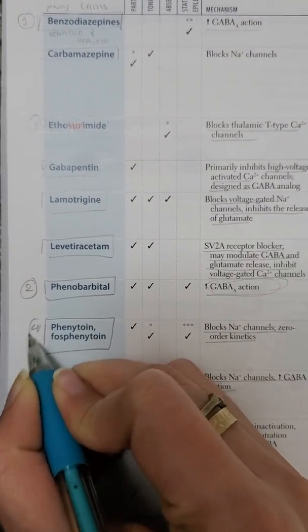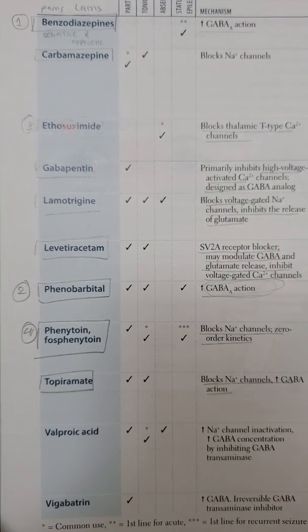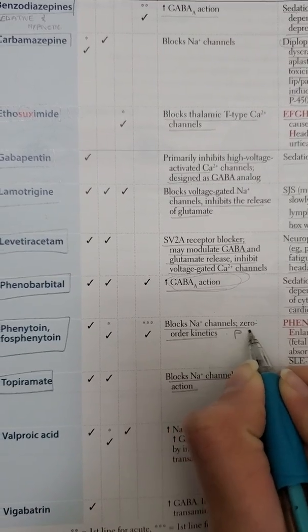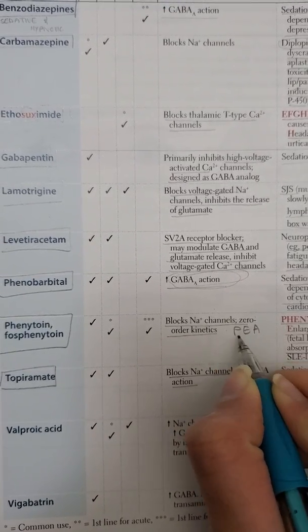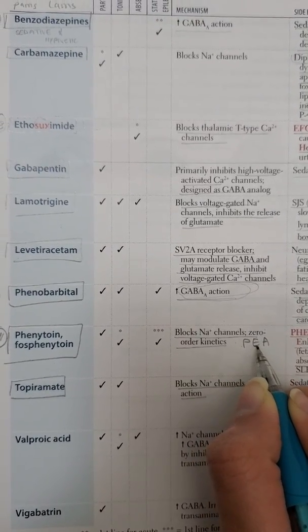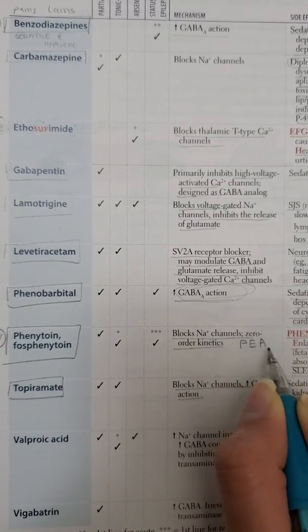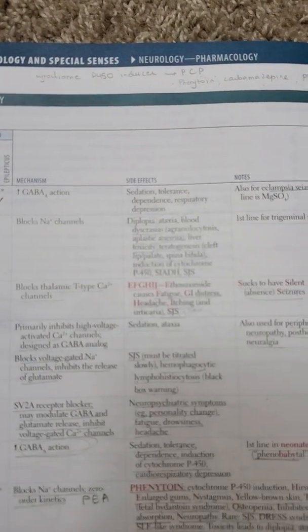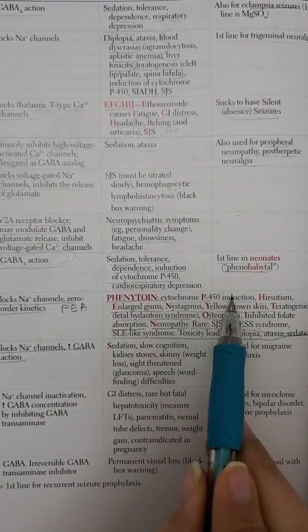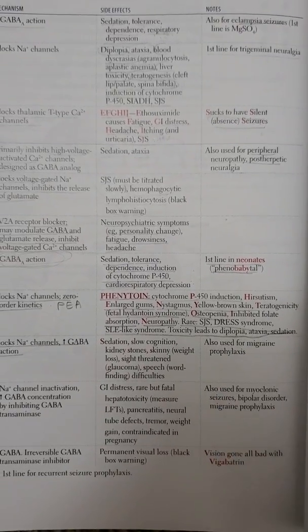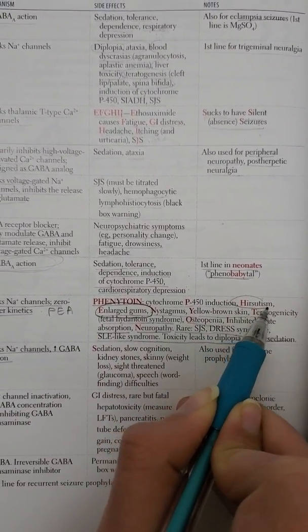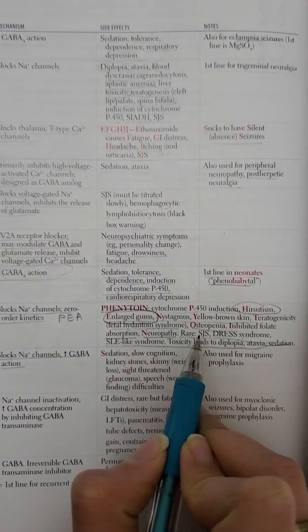Phenytoin is not considered a safe drug. It works by blocking the sodium channel and has zero-order kinetics. The drugs with zero-order kinetics are P, E, and A: phenytoin, ethanol, and aspirin. All other drugs have first-order kinetics. Phenytoin is also a cytochrome P450 inducer, and patients typically present with gingival hyperplasia — enlarged red gums — and hirsutism, meaning excessive hair growth.